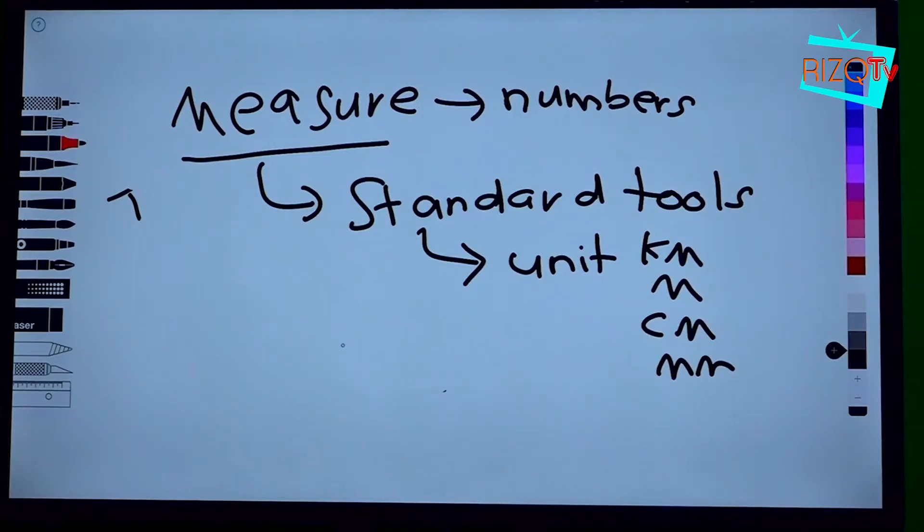Now, I'll give you a way for you to memorize. Kalau masak magi campur minyak masak murni: kilometer, meter, centimeter, and millimeter. Let's move to the next one.